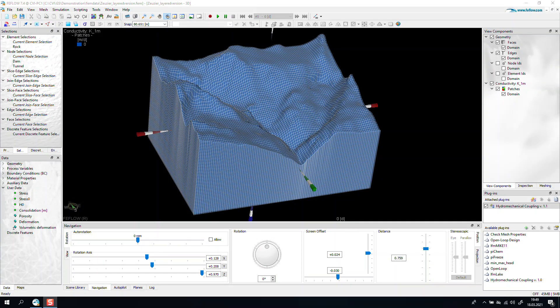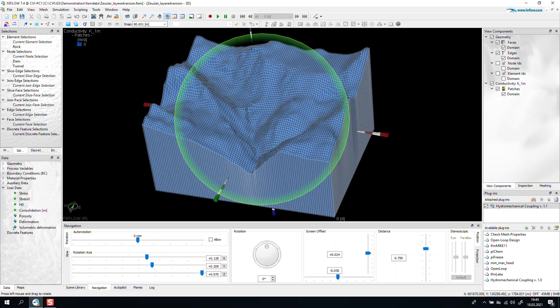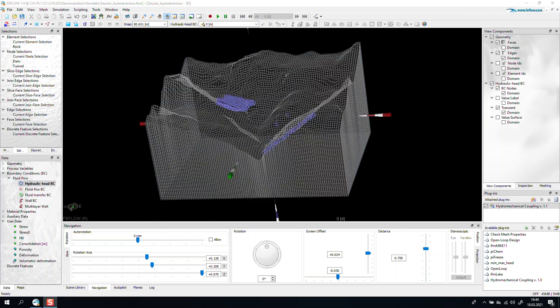We are in FEFLOW, and we see that we have the geometry of the Rouley Tunnel in Switzerland. In terms of boundary conditions, we have a dam represented by a hydraulic head BC, and we also have the location of the tunnel being represented by a hydraulic head BC.